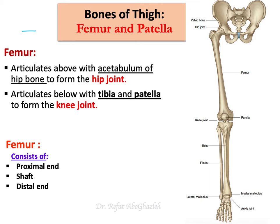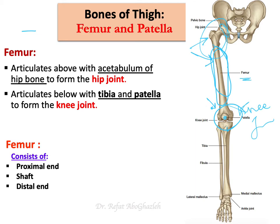Let us shift and move just inferiorly a little bit and you will find the longest bone in your body, which is the femur. Briefly, the femur articulates above with the acetabulum of the hip bone to form the hip joint, and inferiorly it articulates with the tibia and patella to form the knee joint. To make it easier to study, I would like to divide it into three parts: the proximal part, the shaft, and the distal part.